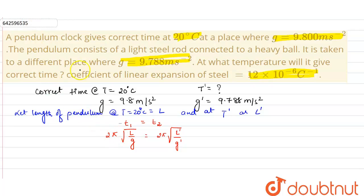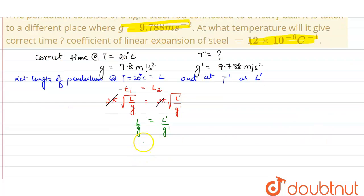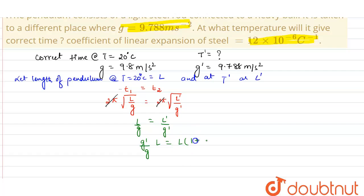The 2π terms cancel out and squaring both sides, we get l/g = l'/g'. From here, l' = (g'/g) × l. Now, using the concept of thermal expansion, l' = l × (1 + α·Δt), where α is the coefficient of linear expansion and Δt is the temperature change.